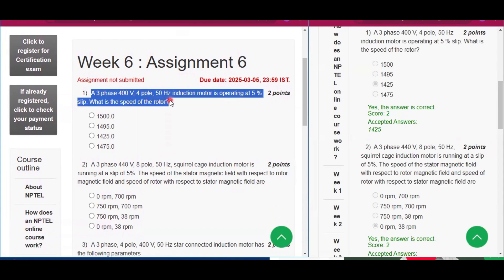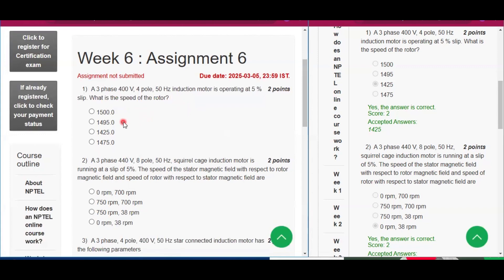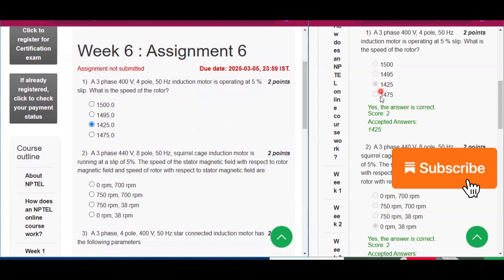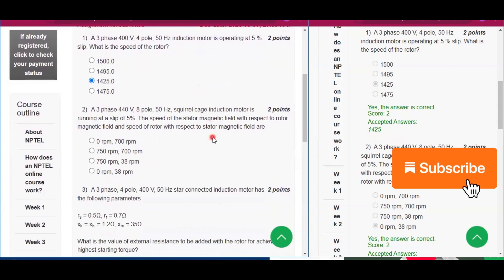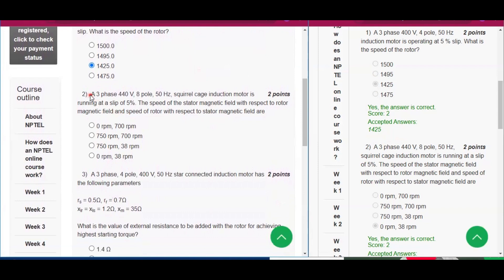Now the first question: A three-phase 400 volt four-pole 50 hertz induction motor is operating at 5% slip. What is the speed of the rotor? The answer will be 1425.